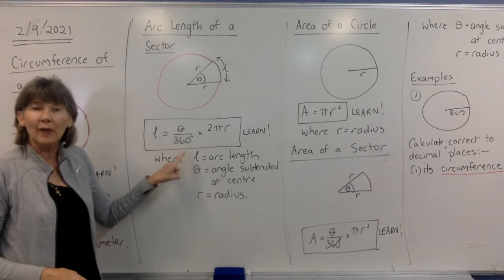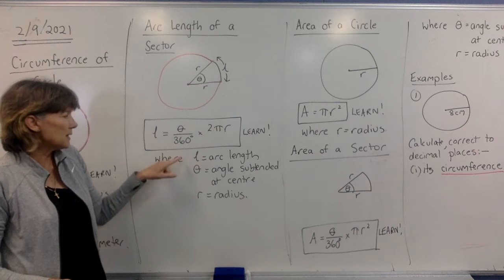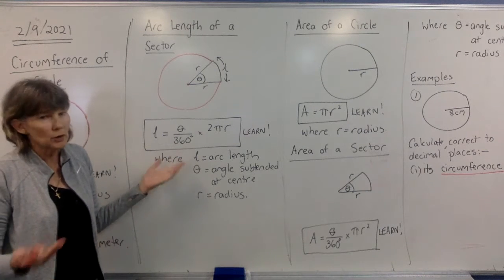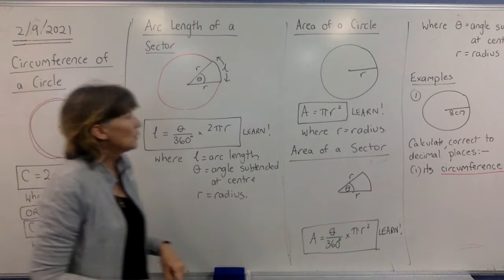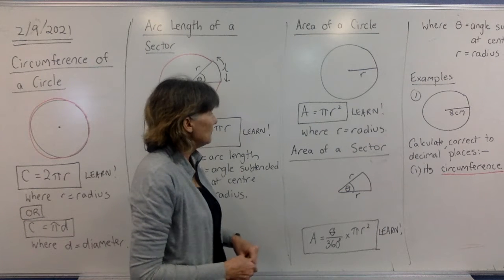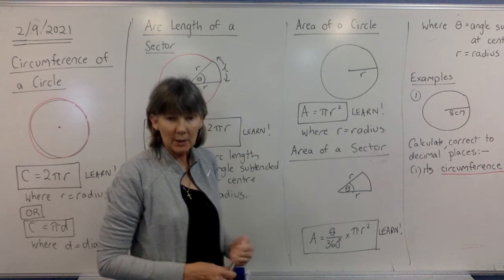Don't forget L is for arc length, theta is the angle subtended at the center or just the angle at the center, and R is the radius. The area of the circle formula, which you should already know, is area equals πR².